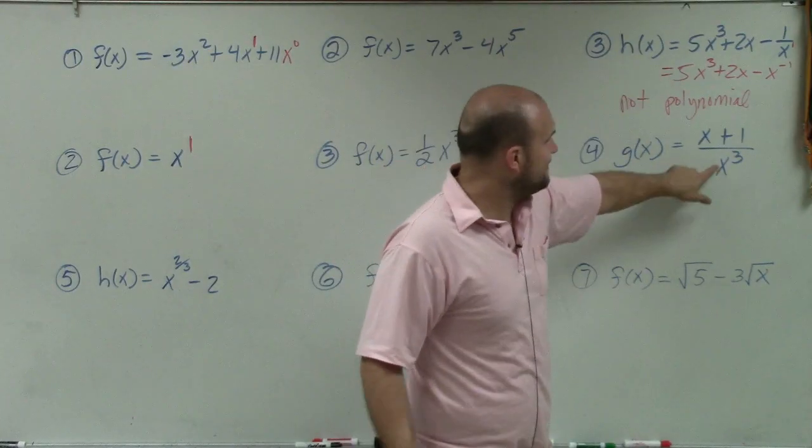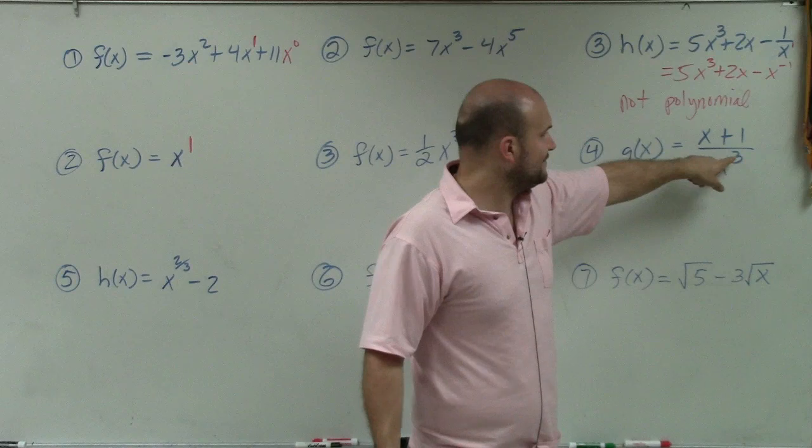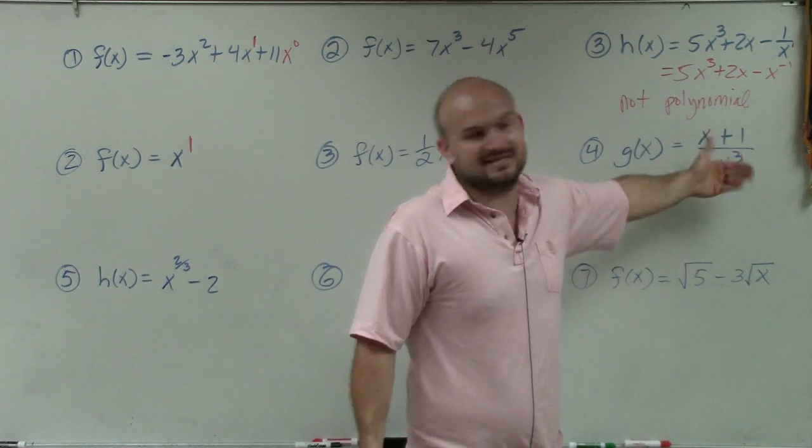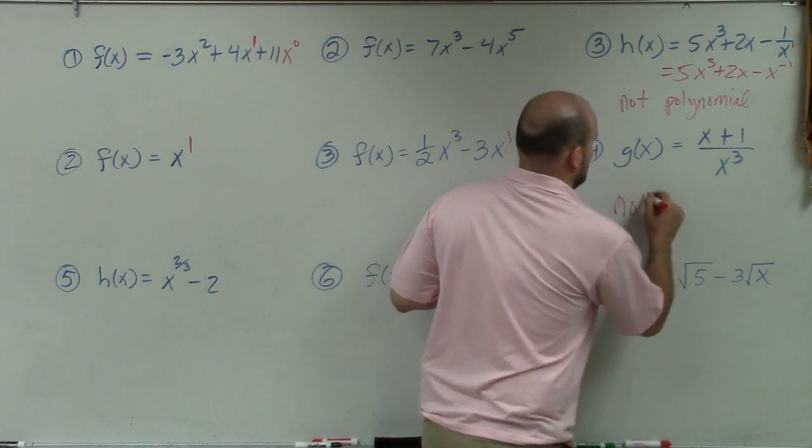In this example, you can see a variable here in the denominator. You can't have variables in the denominator because that's basically a negative integer when you rewrite it in the numerator. Therefore, this is not a polynomial.